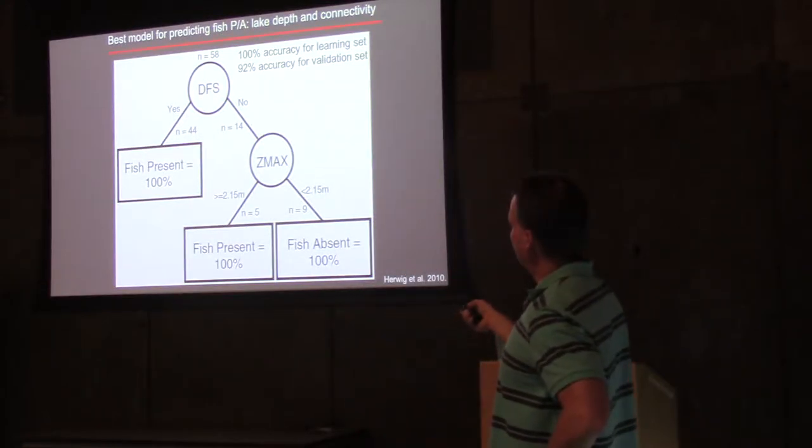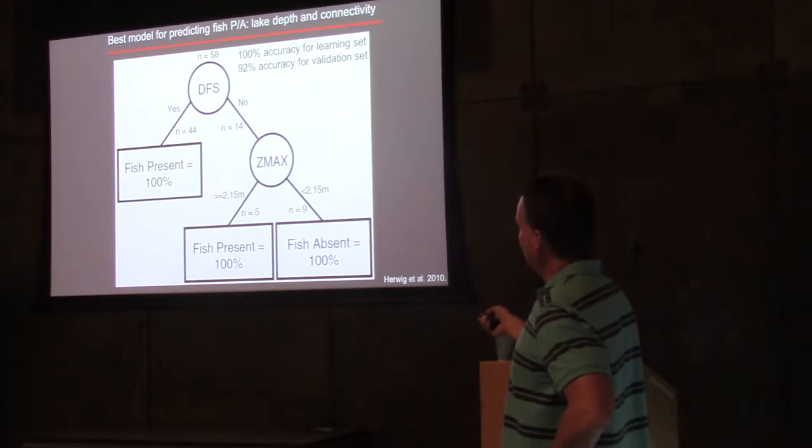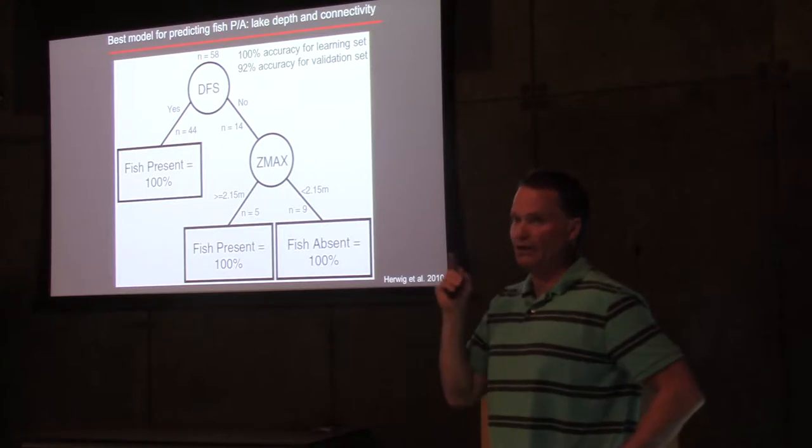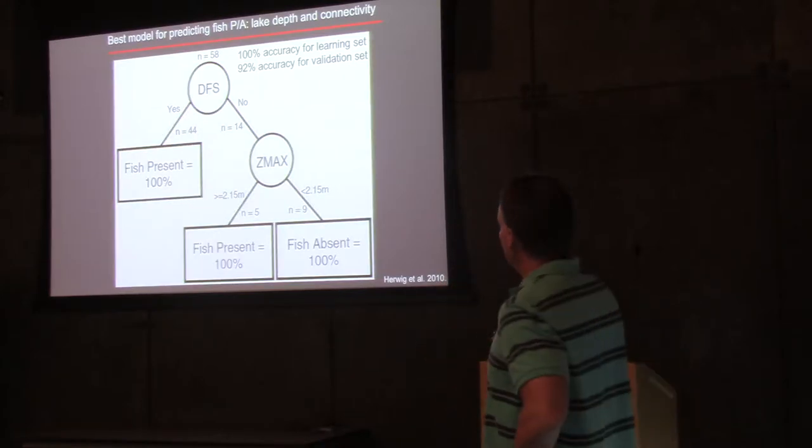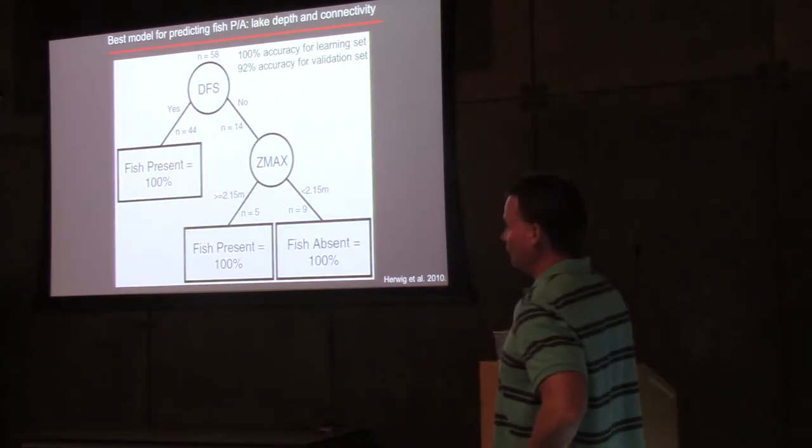If you were not connected with a downstream fish source, there were 14 lakes. The next best variable the model found was maximum depth called ZMAX. Here, if you were deeper than 2.15 meters, boom, you had fish present every single time. If you were shallower than that, fish were never present.